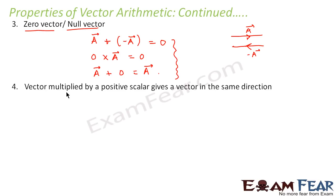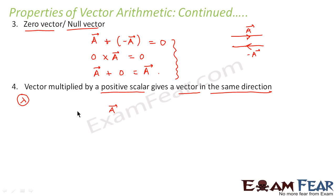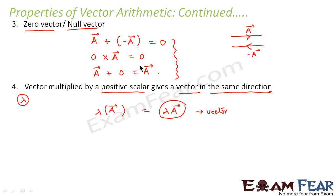The next property: a vector when multiplied by a positive scalar gives a vector in the same direction. If you have a vector quantity a and a scalar quantity lambda, then multiplying gives lambda times a. The magnitude is given by lambda a and the direction is the same as vector a. Whenever a vector quantity is multiplied by a scalar quantity, the result is a vector quantity.